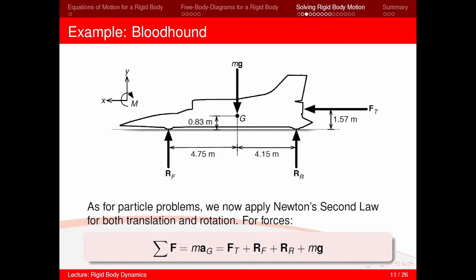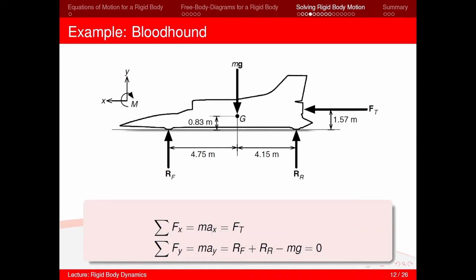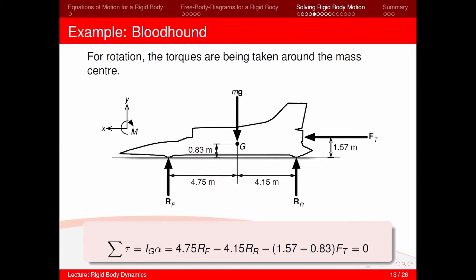Newton's second law in vector form is the sum of all forces equals mass times acceleration, including the thrust force vector, the two reaction vectors, and the weight of the car. Breaking this into x and y components: for the x direction, we just have the thrust force in the positive x direction. For the y direction, we have the two reaction forces at the front and rear wheels — both positive because they are upward — and negative mg for the weight acting downward in the negative y direction. This equals zero as there is no movement in the y direction. For rotation, the torques are taken around the mass center, and Newton's second law for rotation is the sum of all torques equals the moment of inertia around the center of gravity times rotational acceleration alpha.